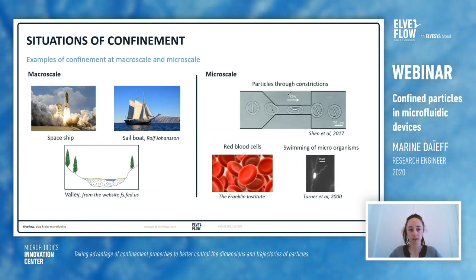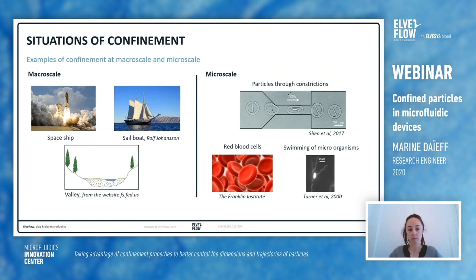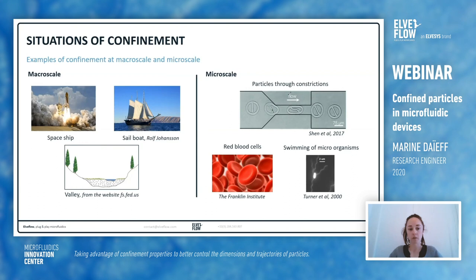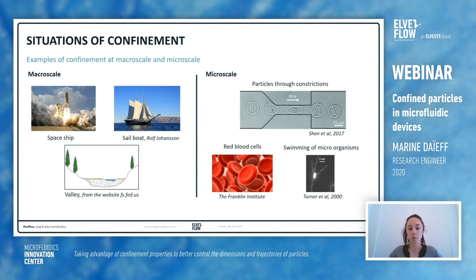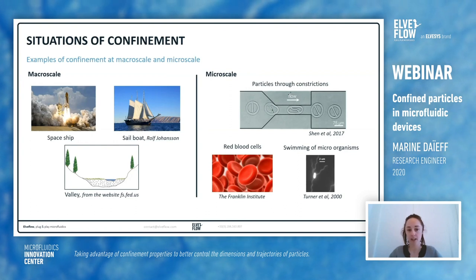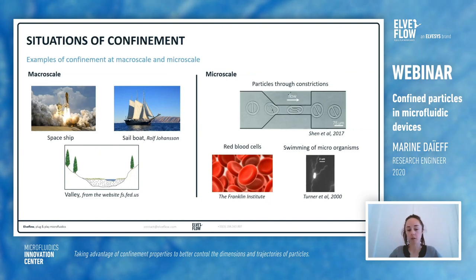Let's define confinement. Confinement occurs when the size of people or particles is similar to the size of the environment. It involves that their motion is constrained in a certain environment. You can have confinement situations at macro scales, for example in a spaceship, on a sailboat, in a valley, or our own confinement at home. And also at micro scale for particles in microfluidic devices, for cells or for microorganisms swimming in a constrained environment.